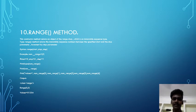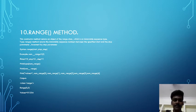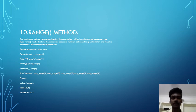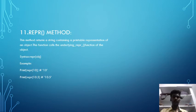The tenth one is range() method. The range() method returns an object of the range class, which is an immutable sequence type. It returns an immutable sequence of numbers between the specified start and stop parameters, incremented by the step parameter. The syntax is range(start, stop, step), and an example is given below.